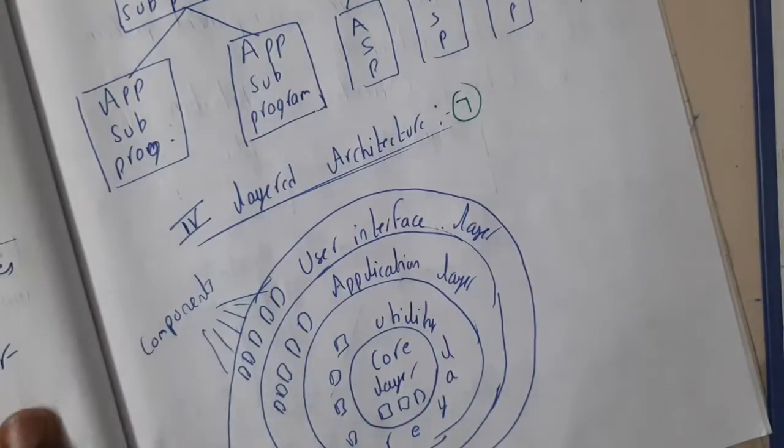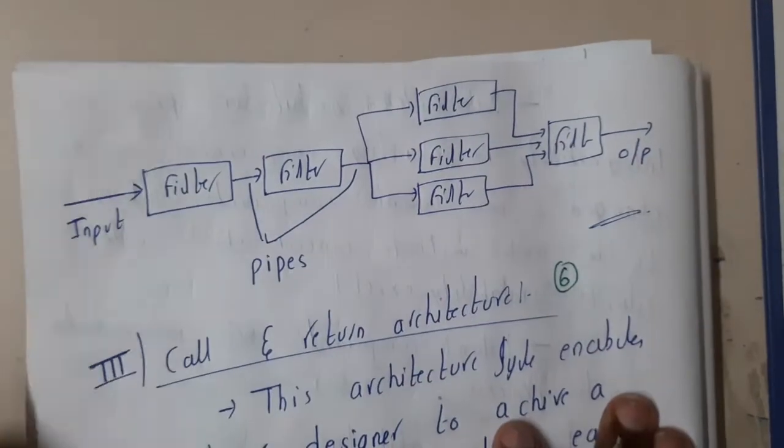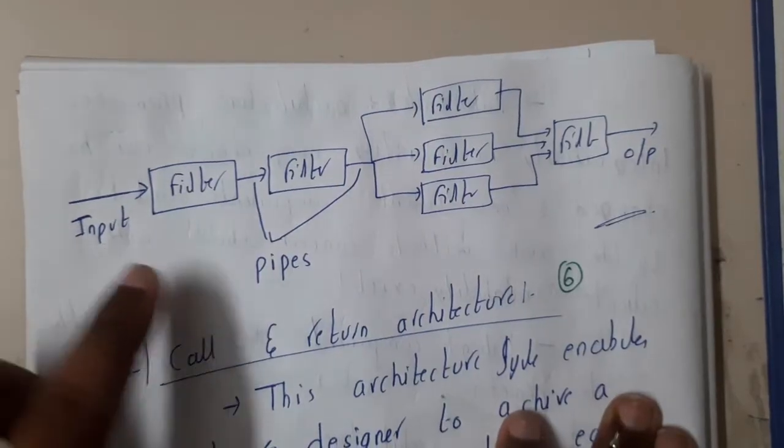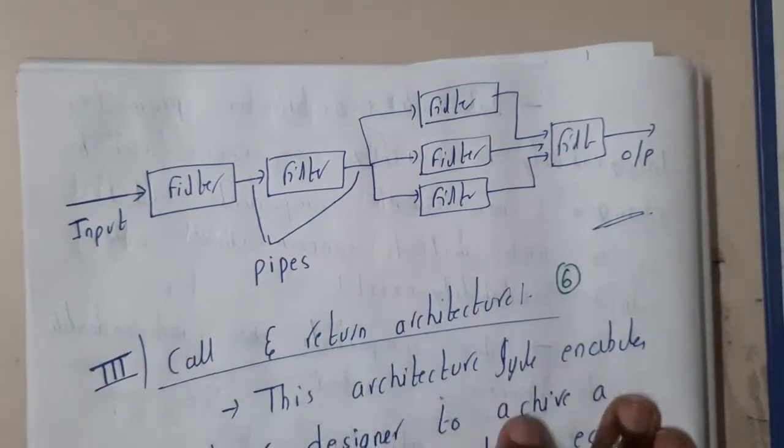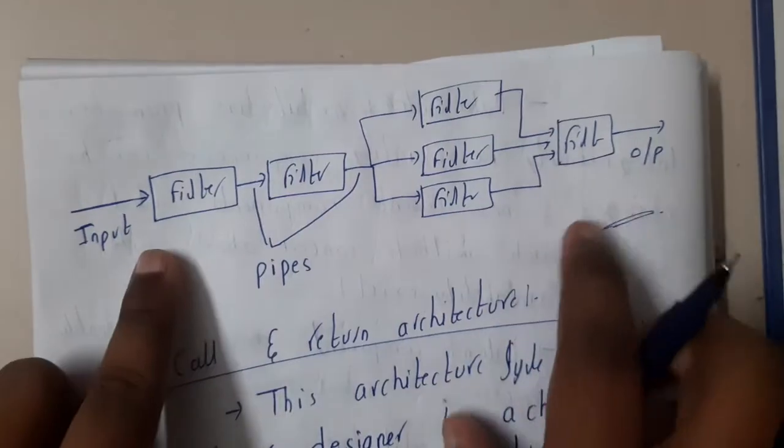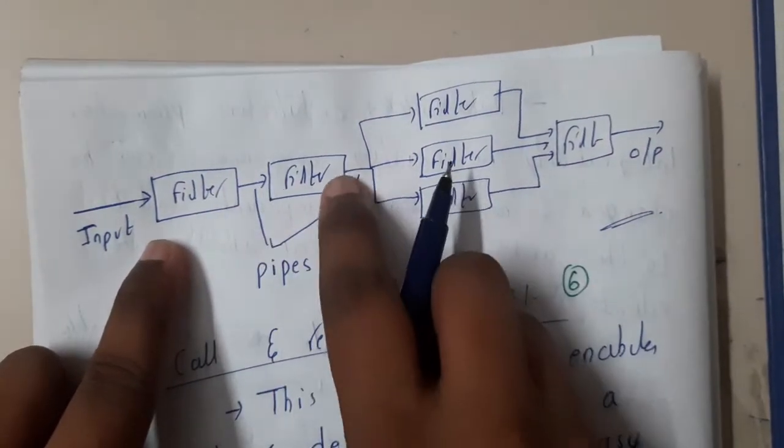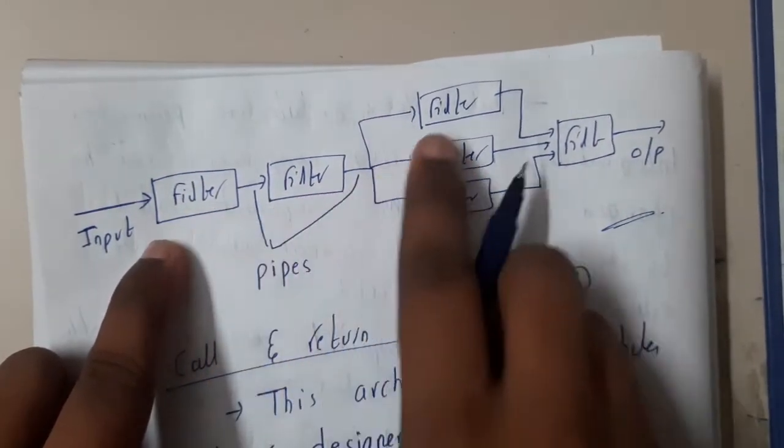Pipe is just for transferring the data. So you can assume in this way - you will be giving an input, and there will be multiple filters. To go to the output, you need to follow all these filters. These are the pipelines - the arrows you can say - and the squares are nothing but the filters.